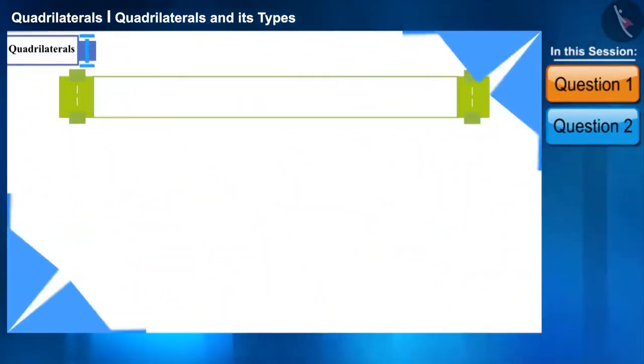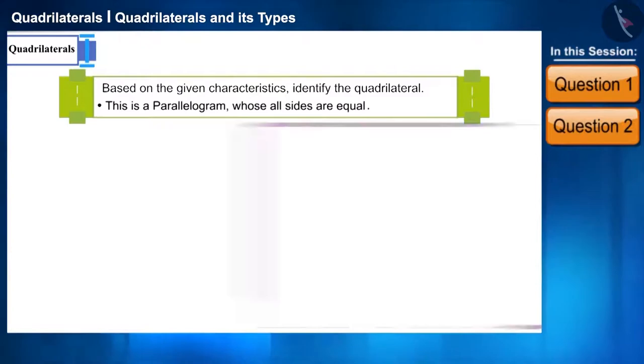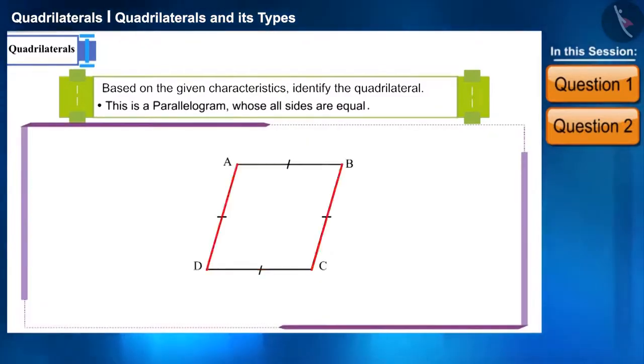Let's move ahead. Let's see one more question. Here are some characteristics of quadrilaterals. Read them carefully and identify the quadrilateral. This is a parallelogram whose all sides are equal. The opposite sides of the parallelogram are parallel and equal, but all its sides are equal so it can be a rhombus.